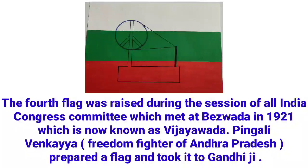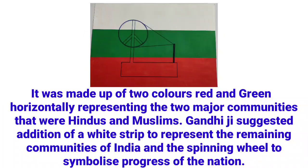The fourth flag was raised during the session of All India Congress Committee, which met at Bezwada in 1921, now known as Vijayawada. Pingali Venkayya prepared a flag and took it to Gandhiji. It was made up of two colours, red and green, horizontally representing the two major communities — Hindus and Muslims. Gandhiji suggested the addition of a white strip to represent the remaining communities of India and a spinning wheel to symbolize progress of the nation.